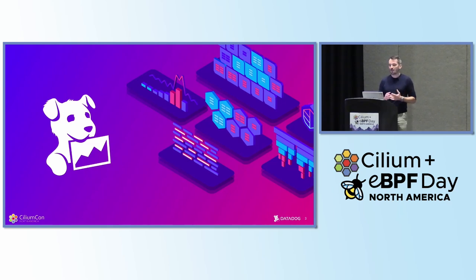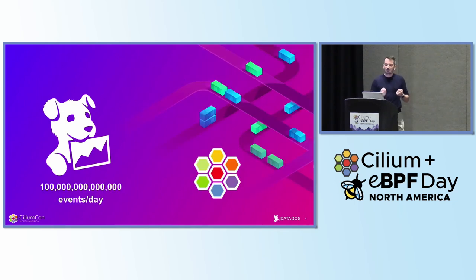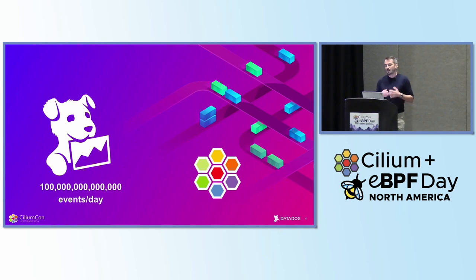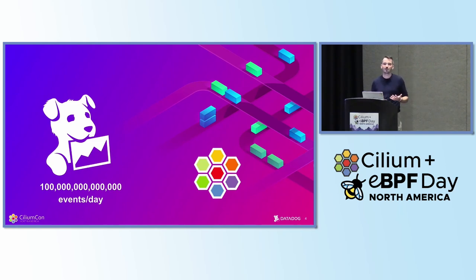In case you don't know about us, we are a software as a service observability platform, and we help our customers to get better visibility into their applications and infrastructure. To give you a sense of scale, as of now, we handle over 100 trillion events a day, and in order to manage this kind of traffic, we do so over a multi-cloud Kubernetes-based environment. To get our network packets flowing smoothly between our hundreds of thousands of pods amongst hundreds of clusters, we decided to use Cilium.